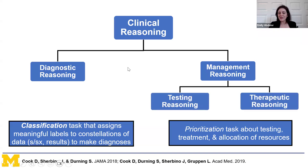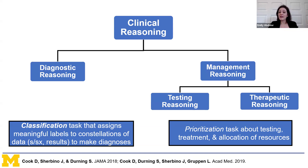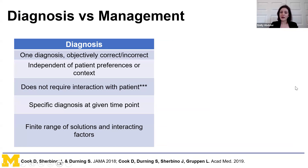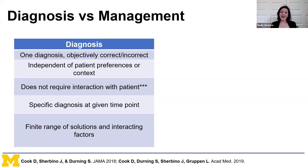Management reasoning can be further divided into testing reasoning—the decision to obtain additional diagnostic tests is technically considered a management reasoning decision—and then therapeutic reasoning, or choice between different drug options. When I think about diagnostic reasoning, at any given point in time there is a diagnosis that is either objectively correct or incorrect. You can start with something general like back pain and move to something more specific, such as acute osteomyelitis from hematogenous spread.